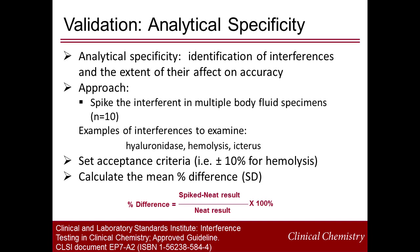Analytical specificity is tested by determining the impact that specimen handling and common interferences have on accuracy. Experimentally, samples are tested before and after treatment, such as with hyaluronidase to decrease sample viscosity, or spiking with an interference such as hemoglobin or bilirubin at increasing concentrations. Analysis includes calculating percent difference and comparing to your preset acceptance criteria. For example, a plus or minus 10% difference might be used to set a threshold for a degree of hemolysis tolerance.